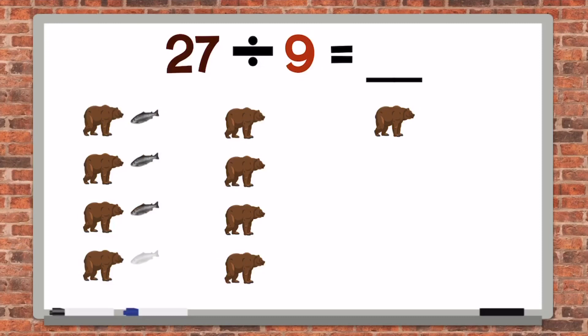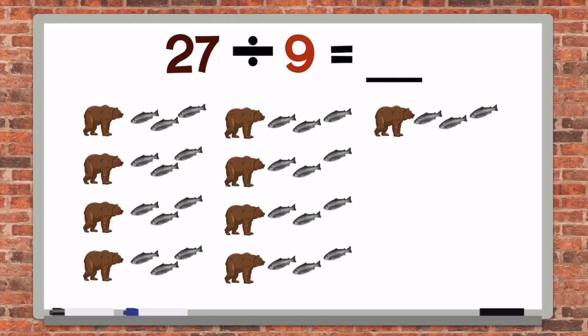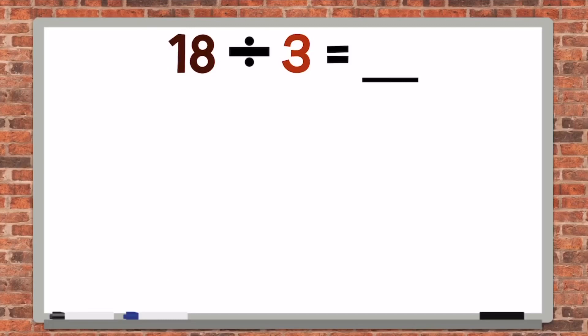1, 2, 3, 4, 5, 6, 7, 8, 9, 10, 11, 12, 13, 14, 15, 16, 17, 18, 19, 20, 21, 22, 23, 24, 25, 26, 27. That means that 27 divided by 9 equals 3, because each grizzly bear gets 3 salmon to eat.